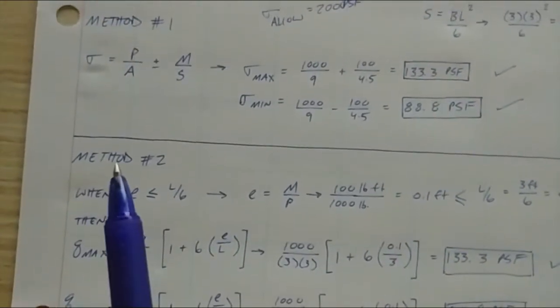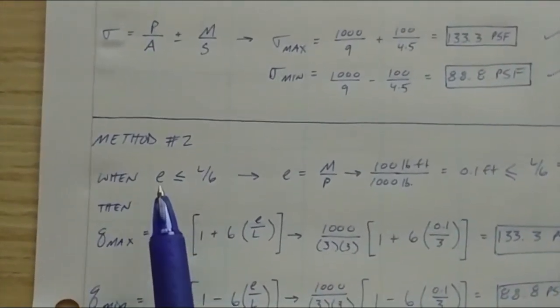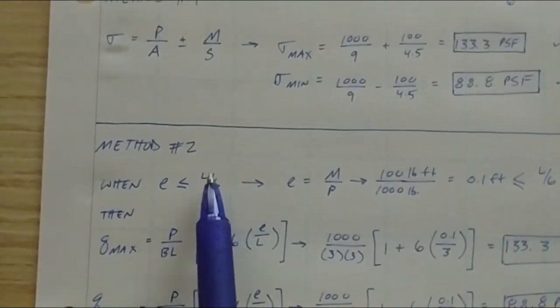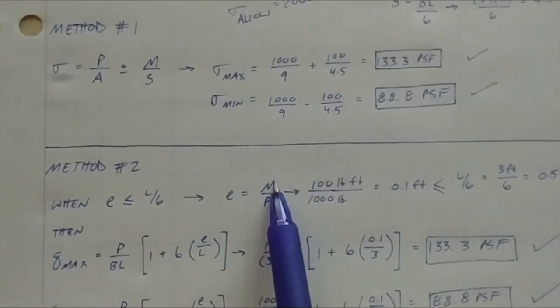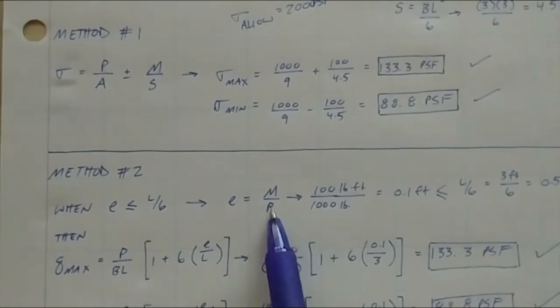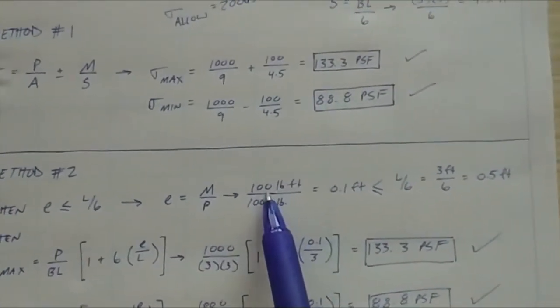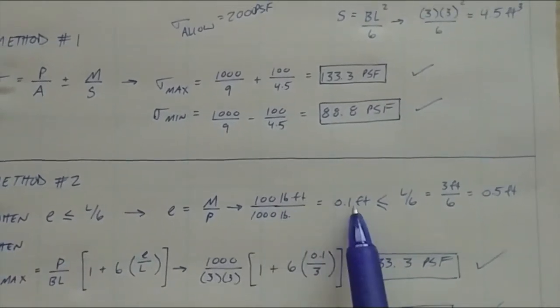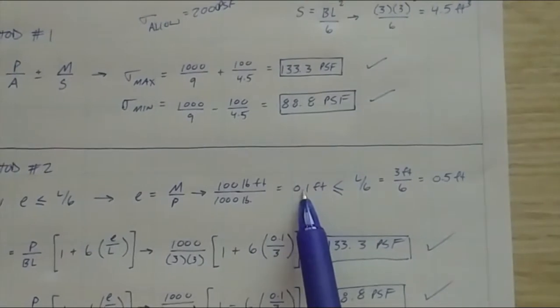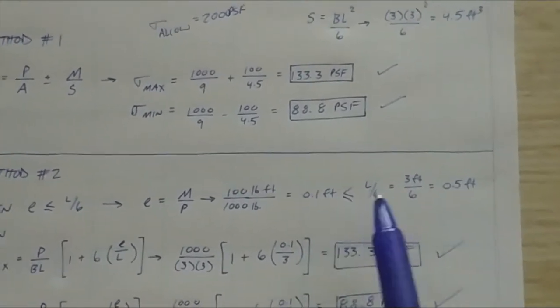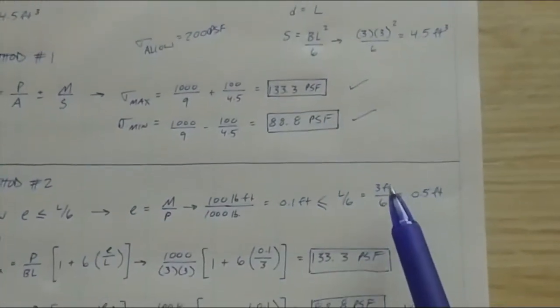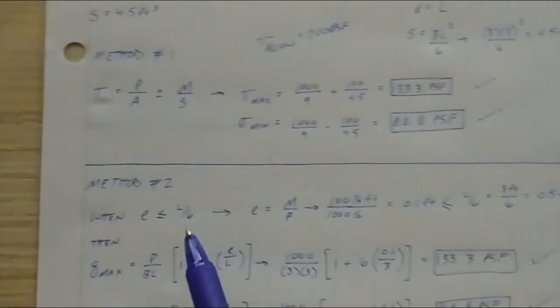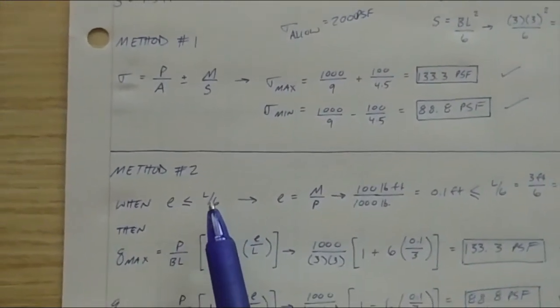But for anything, for any M over S, and any time that your minimum bearing pressure is positive, this method works completely fine. Method two, we are going to start by figuring out what E is, making sure that E is less than or equal to L over six. E is your eccentricity. Your eccentricity is equal to your moment applied over your static downward force P applied. Same thing, just look at those units. Moment, pound foot, over pound, that breaks down into foot. So E is a distance. So 0.1 feet is less than or equal to L over six. Your L is three, which is 0.5 feet. So this holds true. Our E is less than L over six.